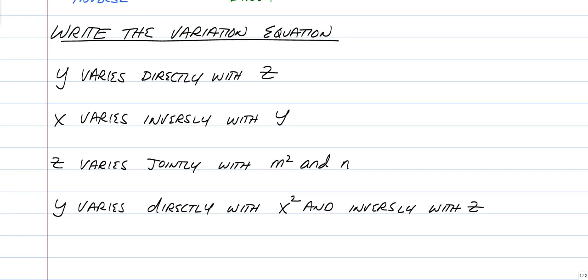Now this is just some practice with writing a variation equation. So we already talked about what these mean. Why don't you just pause the video and try to write these by yourself and see if you come up with the correct equations. Remember, K will be in all of them, and you only write K once. K only occurs once in each equation. All right? Give it a try. So Y varies directly with Z. Y varies means Y equals, directly is multiplication, so you should have Y equals KZ.